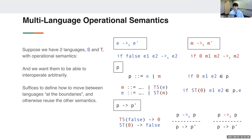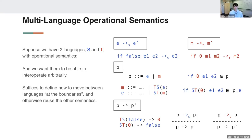This suffices for values — the multi-language paper calls this the lump embedding. A question came up about whether this extends to closures, and yes it does — I'll talk about closures in just a minute.